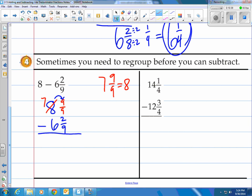What's nice is now we can actually subtract. We have 9 ninths minus the 2 ninths, and that's 7 ninths. And then we have 7 minus 6, and that's a 1. Here's our answer. 1 and 7 ninths. Give it a shot on this last one here. This is the last one we have.